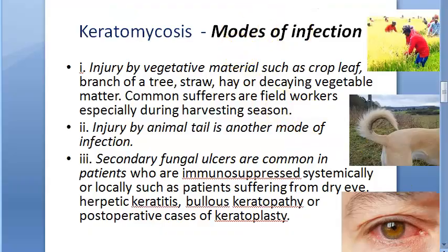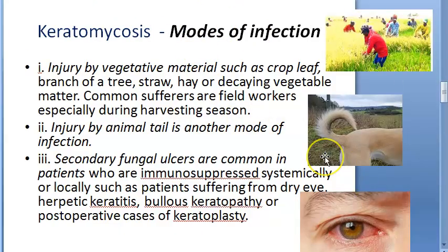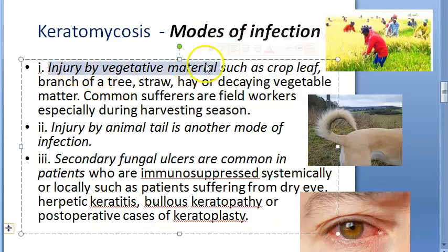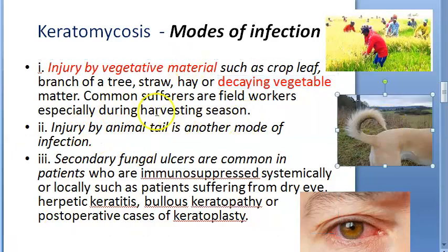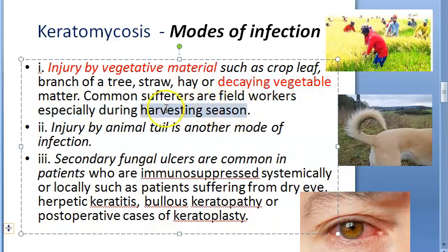Modes of infection: first, injury by vegetative materials such as leaves, branches of trees, straw, hay, or decaying vegetable matter that injures the eye. This is very common during the harvesting season.